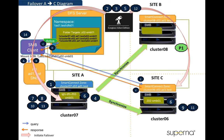Next is the diagram for DFS mode failover from A to C. During this failover from A to C, the SMB share name on cluster 07 is changed to the IGLS DFS prefix, and the SMB share name on cluster 06 is changed to the actual share name. With these SMB share name changes, the DFS path to cluster 06 becomes the active path for the client to access after this failover.